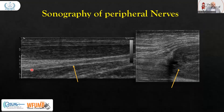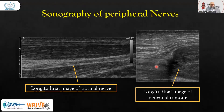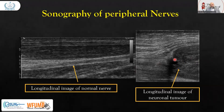Here is a nerve longitudinally, and you can see there is a neural tumor — this hyperechoic area is the neural tumor. Along with the nerve, we have part of the tendon, the muscle, subcutaneous tissue, and skin. Below the nerve are also some tendons and muscles. Here we have a longitudinal view in which a large neural tumor is seen.